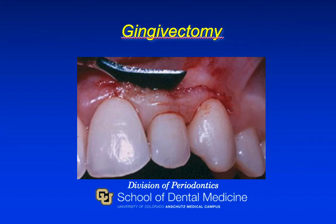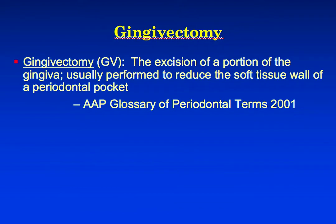Let's begin talking about surgical procedures by discussing the oldest surgical procedure, the gingivectomy. The gingivectomy was originally developed in 1884 by a man named Ravisak. Its function is the same today as it was then. Formally, a gingivectomy is defined as the excision of a portion of the gingiva and used to reduce the soft tissue wall of the periodontal pocket.